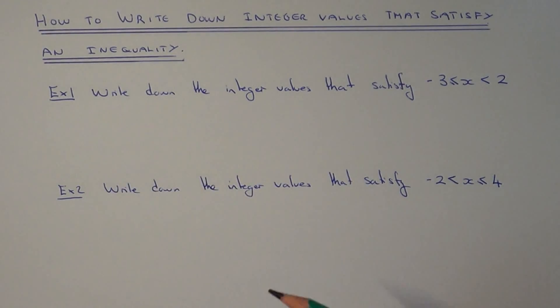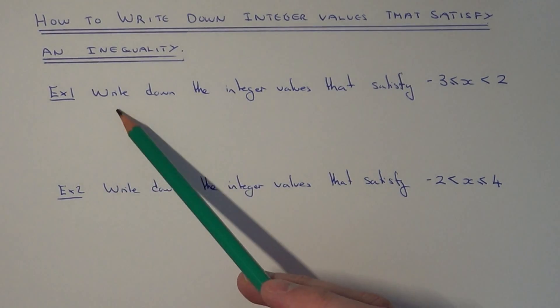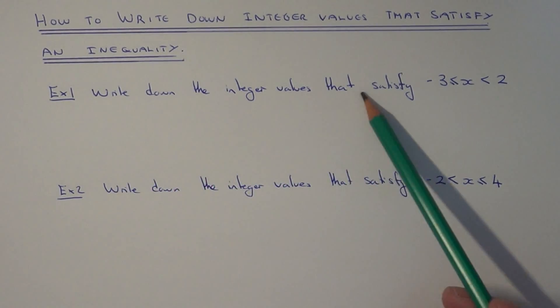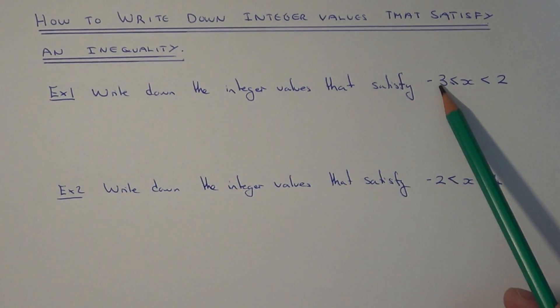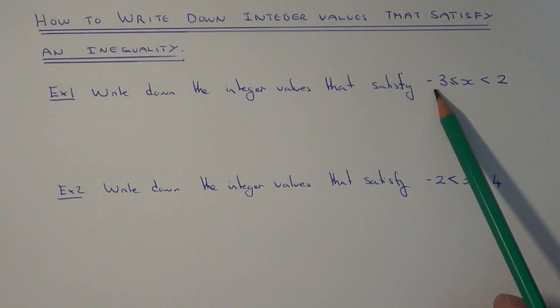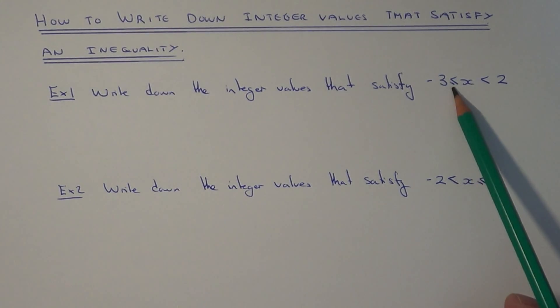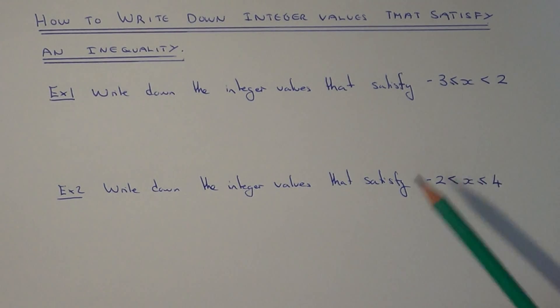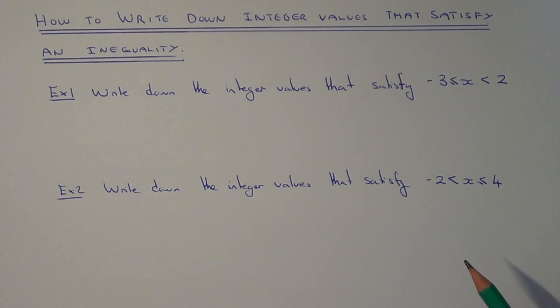Let's have a look at example 1. We need to write down the integer values that satisfy the inequality: minus 3 is less than or equal to x, which is less than 2.